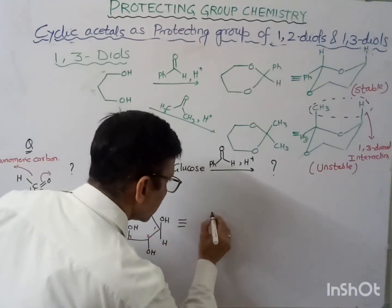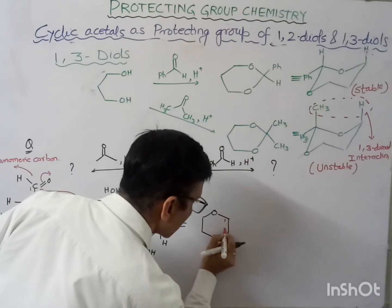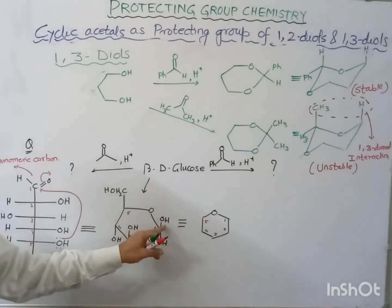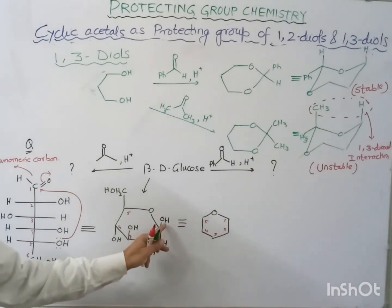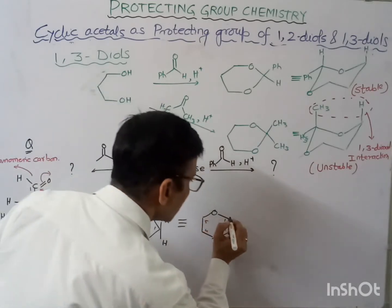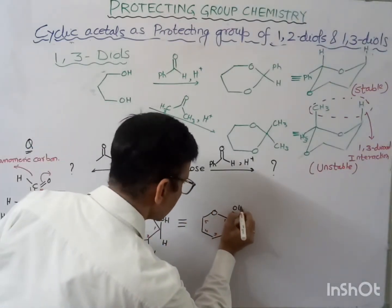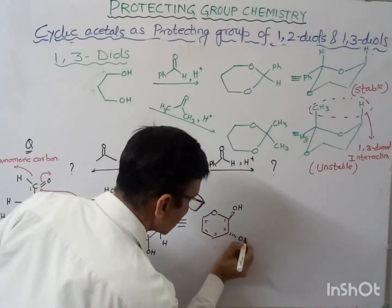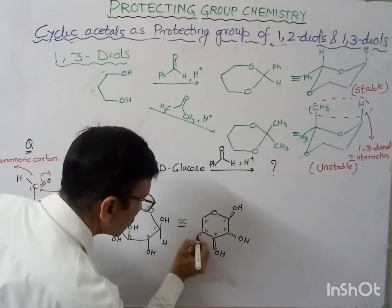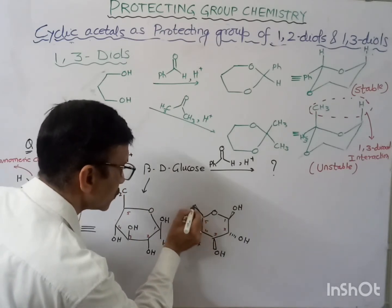I can also write it in another form: first, second, third, fourth, and fifth carbons. Here OH is above the plane — for beta-D-glucose it would be in the wedge form. At C2 OH is below, at C3 it is above, at C4 it is below, and at C5 it is above. This is CH₂ and this is your OH.